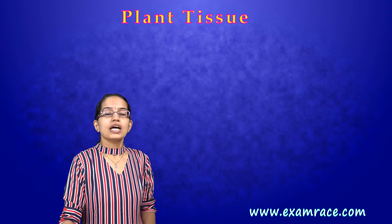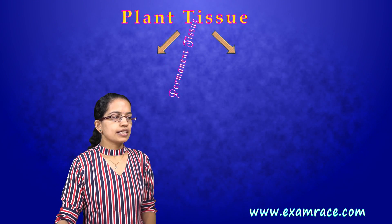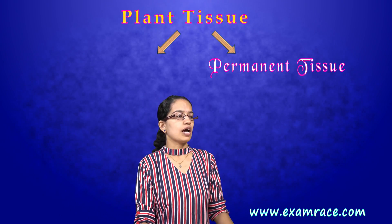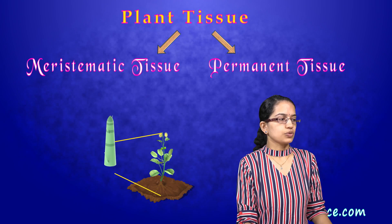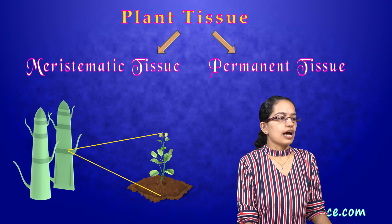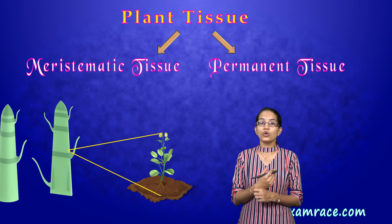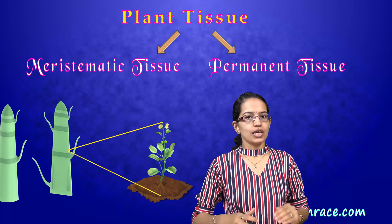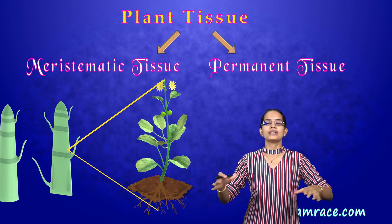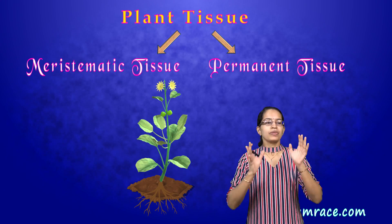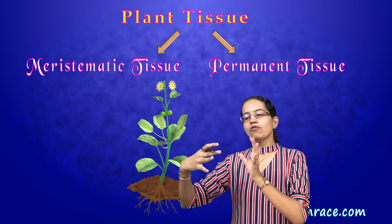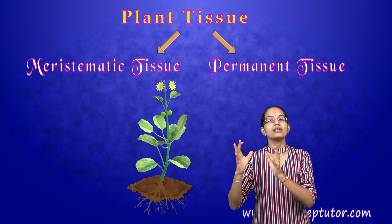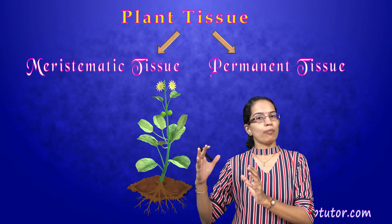We classify tissues either as permanent tissues, where the function of differentiation is very well developed, and the second type is meristematic tissues. Meristematic tissues are basically the dividing tissues where growth actually happens, and they remain till the time you have growth. As soon as the growth is over, these meristematic tissues degenerate. Therefore, we understand the growth of a plant cell or a plant, which is very different from an animal cell.